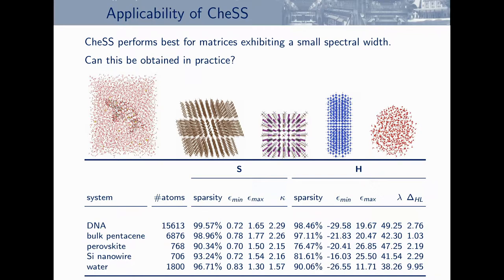Do we encounter such situations in electronic structure codes? It depends on the basis that you use, but indeed it's possible. I show here a few systems — all of them are very large and very sparse, calculated with a localized basis as implemented in the BigDFT code, which is the code that was first coupled with CHESS. For the overlap matrix, the condition number is only of the order of two, and the spectral width of the Hamiltonians is of the order of 30 to 50 electron volts. If you are in such a setup, CHESS performs extremely well.